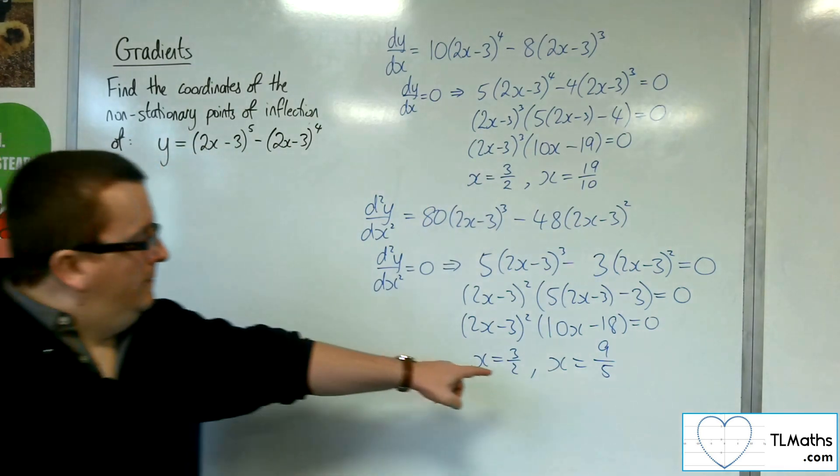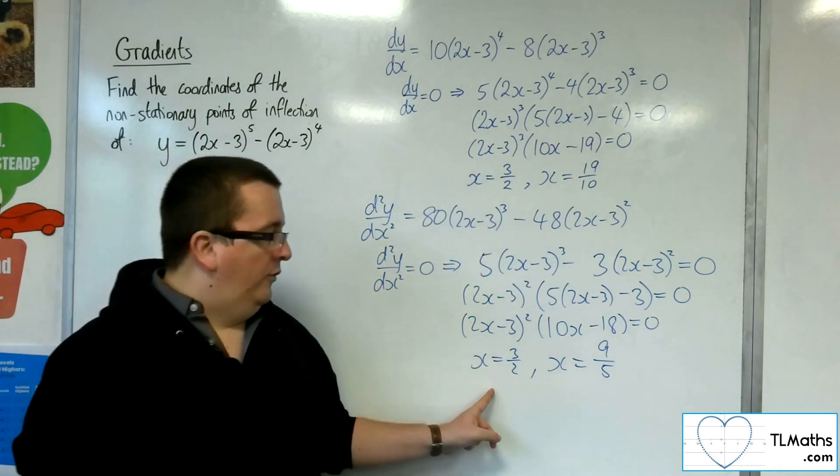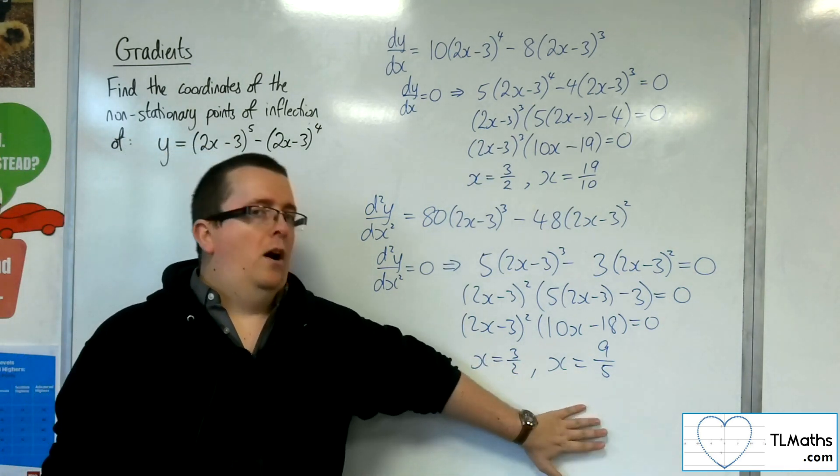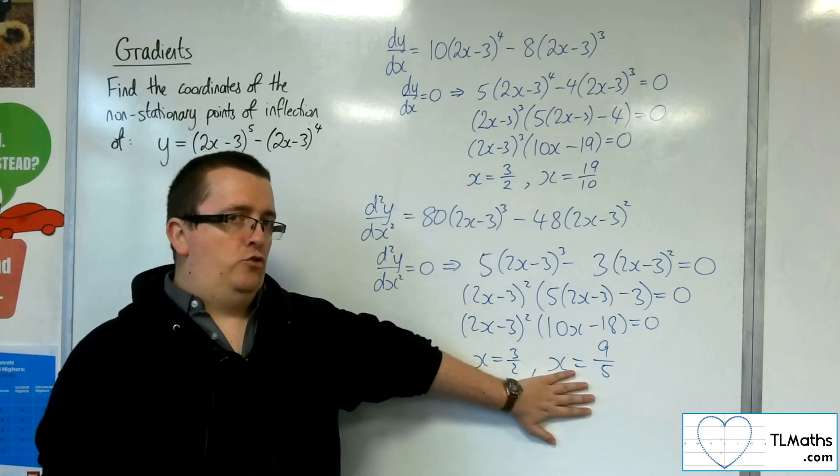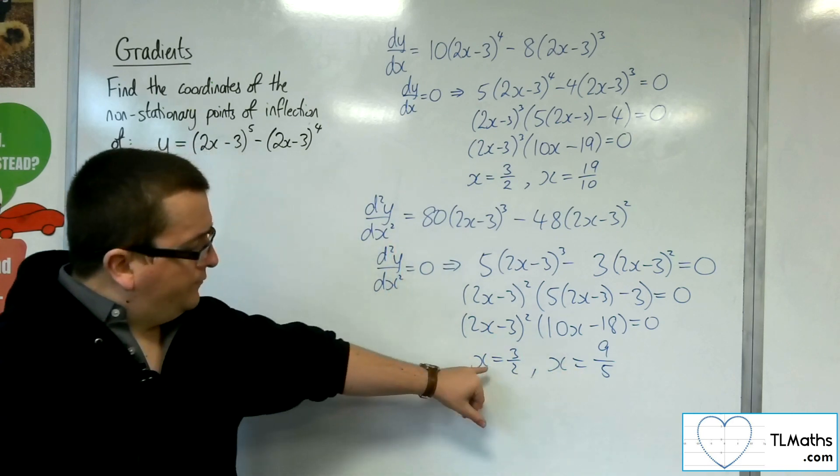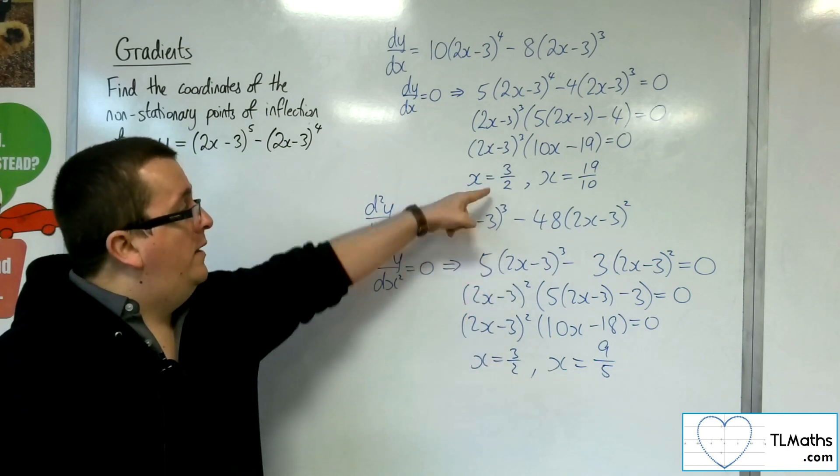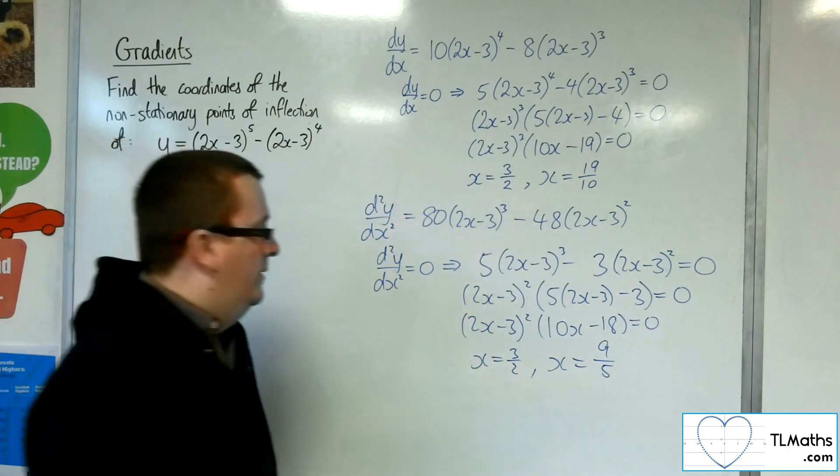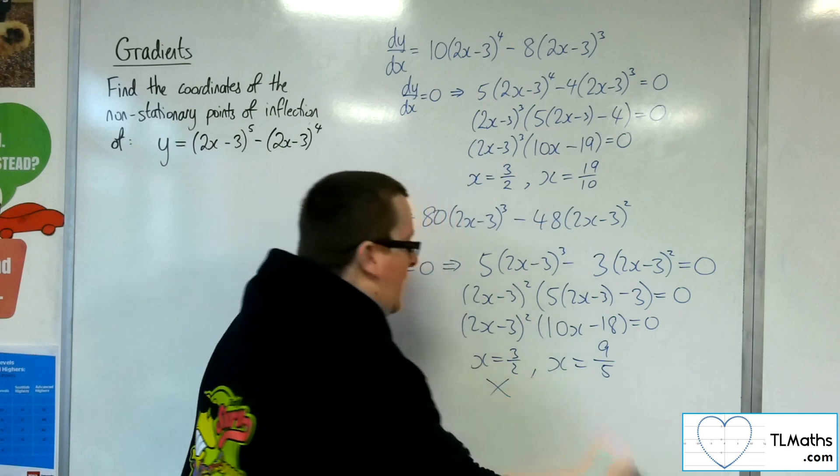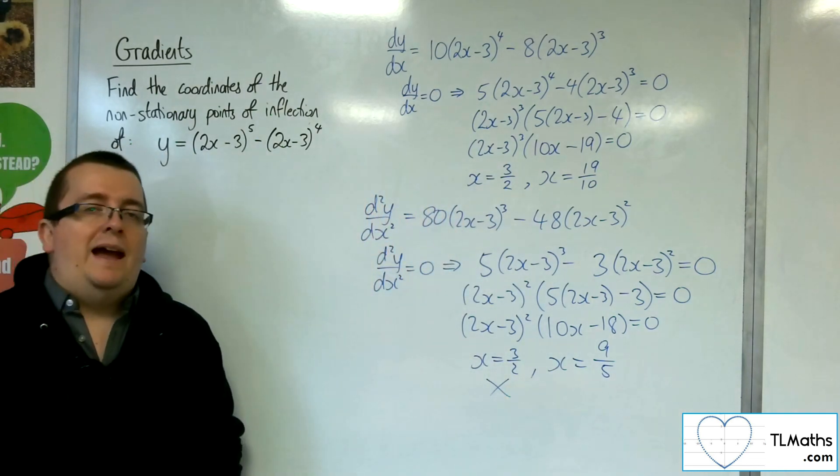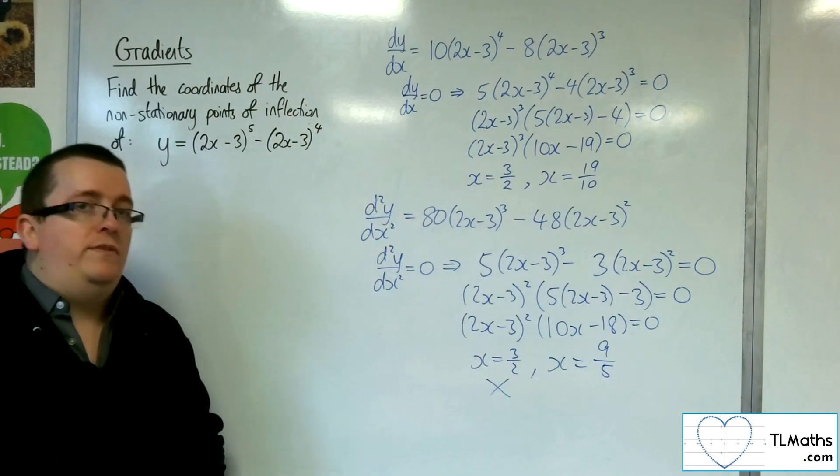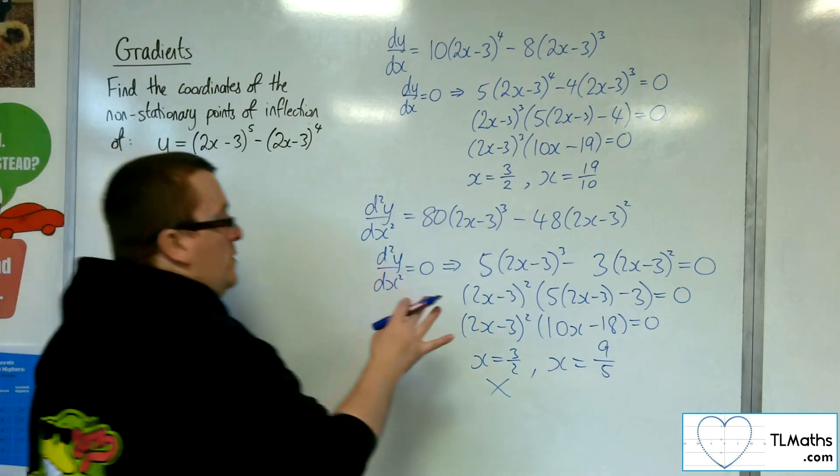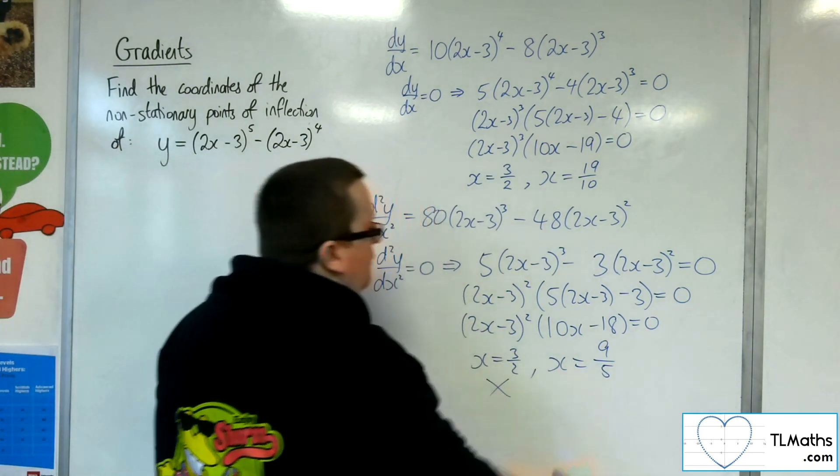Now clearly, x is 3 halves and x is 9 fifths are possible non-stationary points of inflection. However, I know from this stage that x is 3 halves is actually a stationary point, and so that is not going to give me a non-stationary point of inflection. So the only possible one is x is 9 fifths.